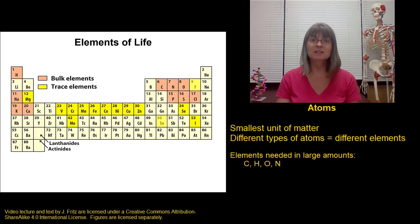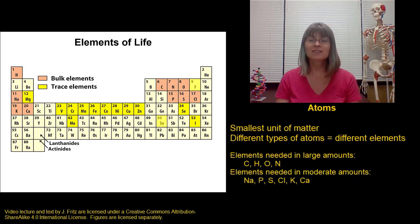But we do need a lot of other elements in smaller amounts. We need things like phosphorus, sulfur, chlorine, sodium, potassium, and calcium in moderate amounts. These are particularly important for things like building proteins and DNA and allowing our muscles and nerves to work the way they are supposed to work.